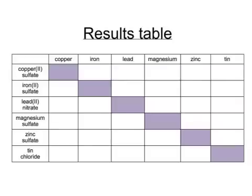Your results would go into a grid such as this, where each metal is combined with each other solution. If you see a reaction occurring, then you would normally put a tick in the reaction box. So, for example, if iron is added to copper sulfate, a reaction occurs, and you put a tick in there.